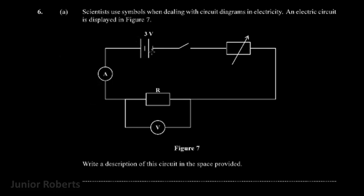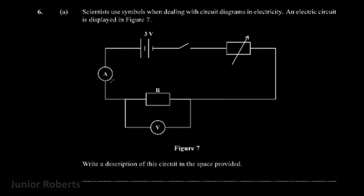Here we have our circuit. We have a battery rated at three volts, a switch, and a resistor — specifically a rheostat or variable resistor, indicated by the arrow symbol. We also have a fixed resistor. Across that fixed resistor we have a measuring instrument, specifically a voltmeter, and then finally we have an ammeter. So we have the switch, the rheostat, the fixed resistor, and the ammeter in a series arrangement, and the voltmeter is connected across the fixed resistor.